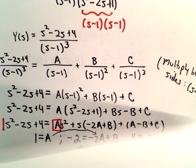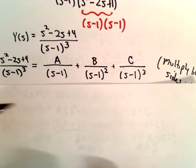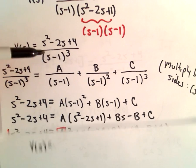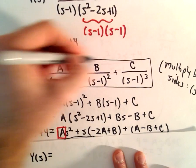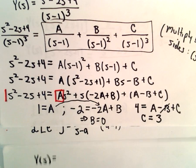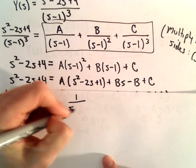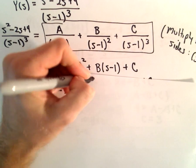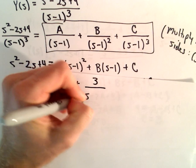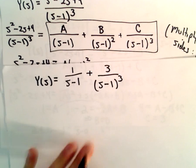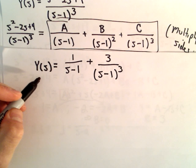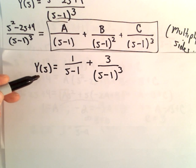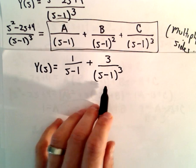So now we have done our partial fraction decomposition. That tells us that Y of s — which was s squared minus 2s plus 4 over s minus 1 to the third — breaks up as: a equals 1, so 1 over s minus 1; b equals 0, so that term drops out; and c equals 3, so plus 3 over s minus 1 to the third power. That's our expression for Y of s. What I'm going to do in the next video is use some inverse Laplace transforms from tables to actually come up with our solution.